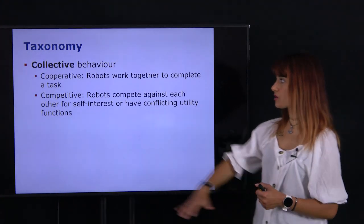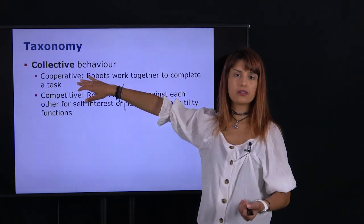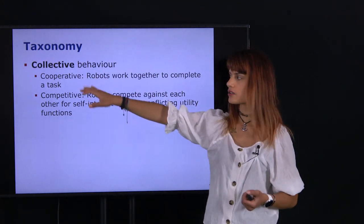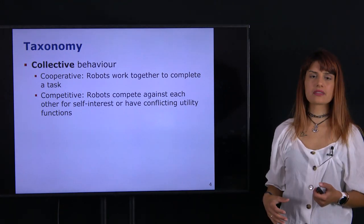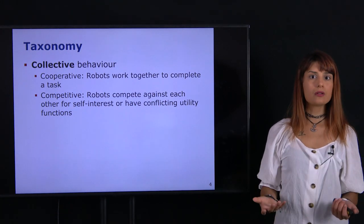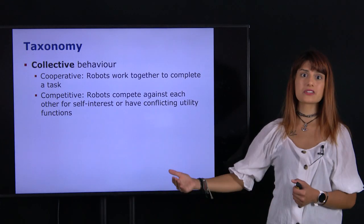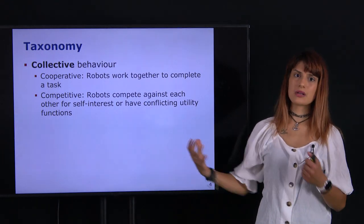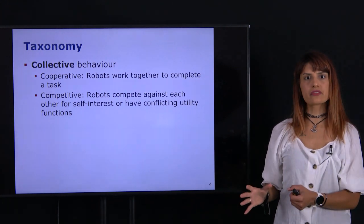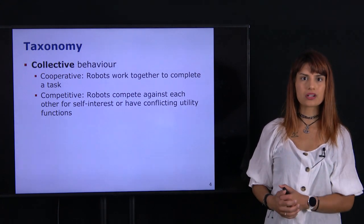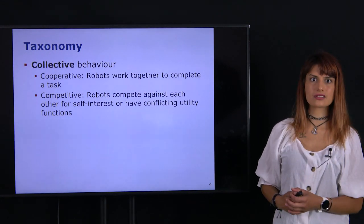One example of a cooperative scenario is the UAV and ground vehicle working together, whereas in competitive tasks we could have something like robot football where we have to score points against the other team. By definition the robots are still operating in the same environment and working in the same workspace, so we need to reason about other agents' intentions.